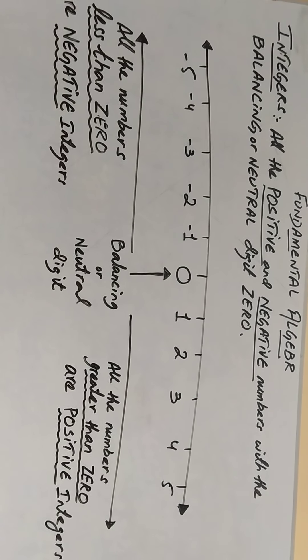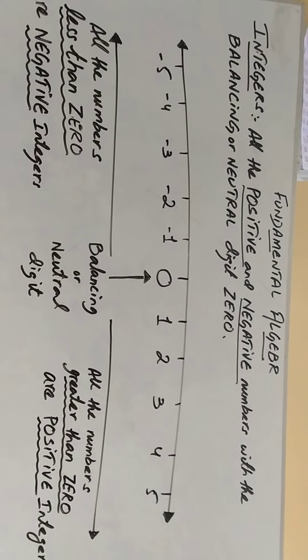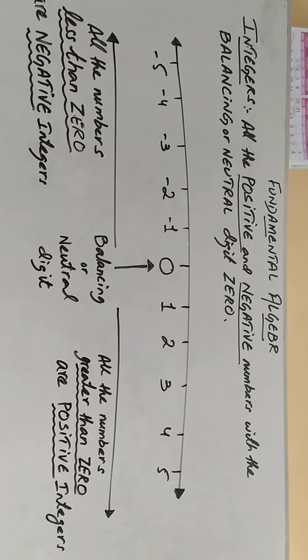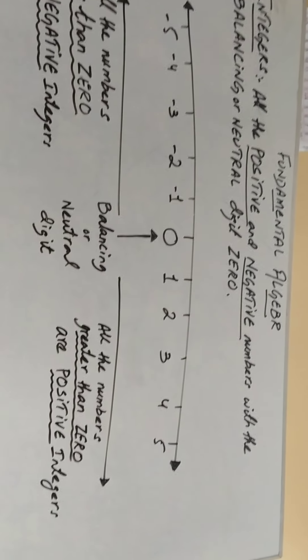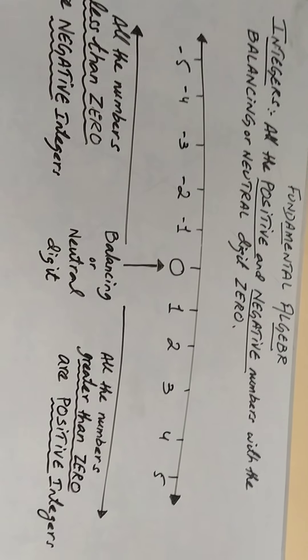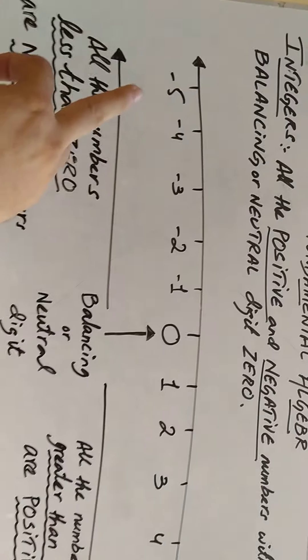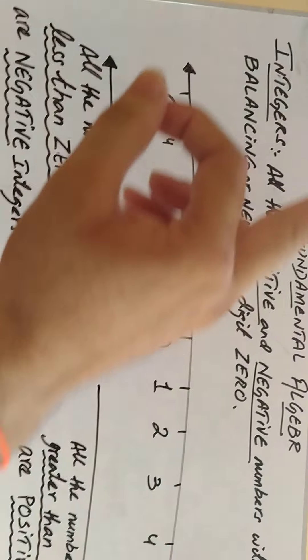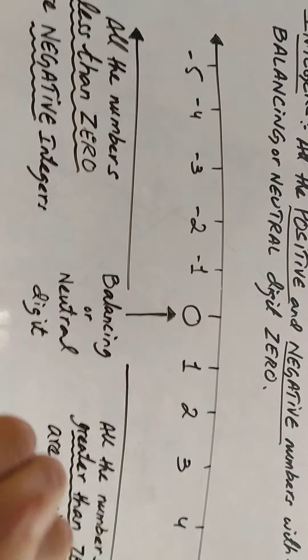Why am I explaining integers and giving you this brief review? Because positive and negative give you more idea about separators of integers. When we are doing fundamental algebra, there are different things — especially fundamental operations: plus, minus, multiply, and divide. In algebra, plus and minus are called separators, because just as in integers every number has a sign before it, in algebra these positive and negative signs separate the terms and make terms. I will give you examples of terms in fundamental algebra.